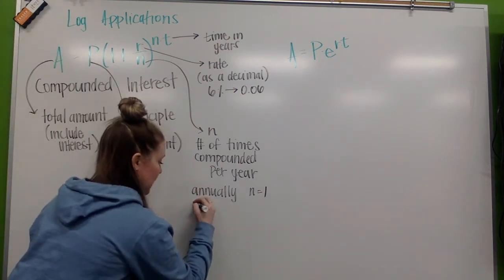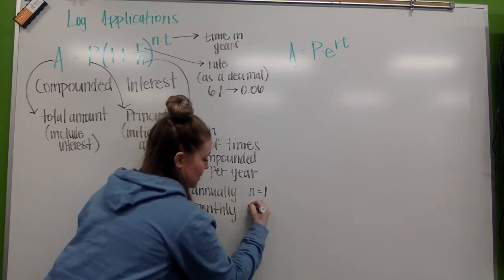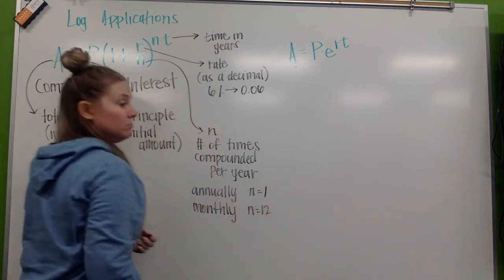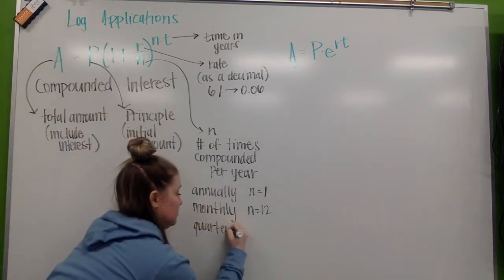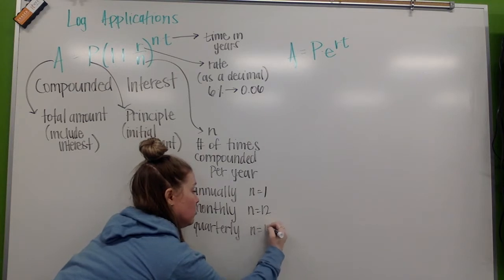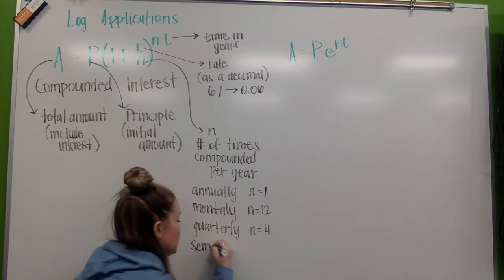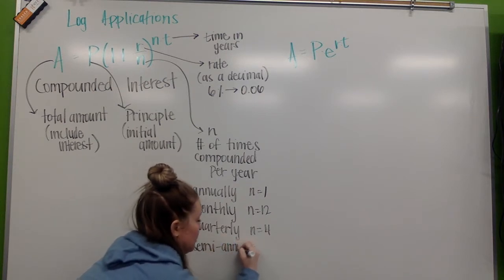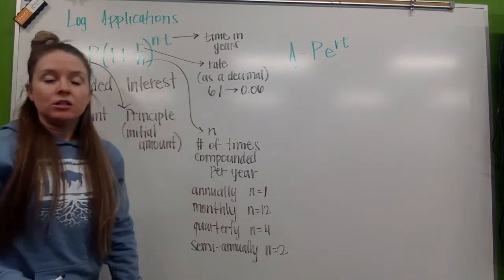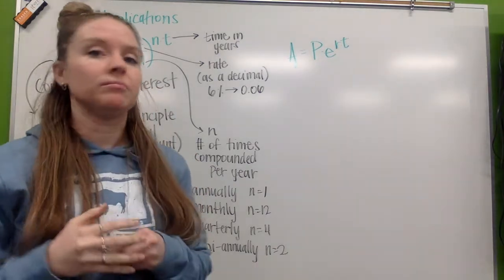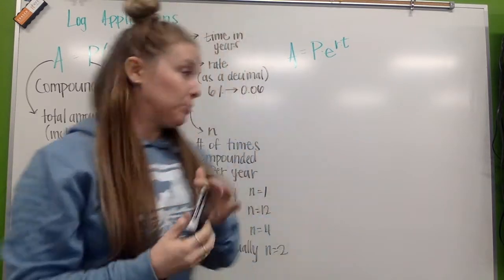So, that means N equals 1. We could say monthly. And that's going to be N equals 12. Quarterly, N equals 4. Semi-annually, that's going to happen twice a year. So, there's a couple different options here. All it is, is how many times is it compounded a year? And that's what our N value represents.